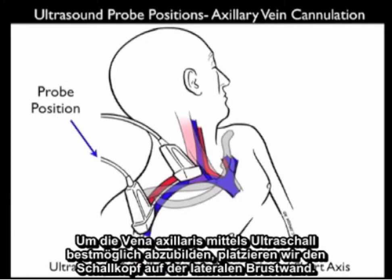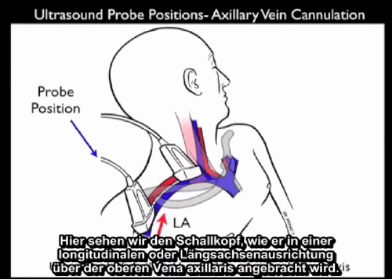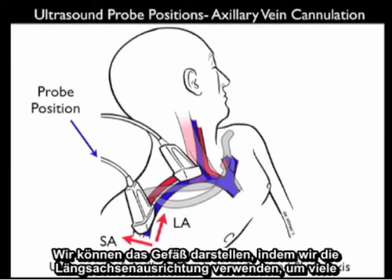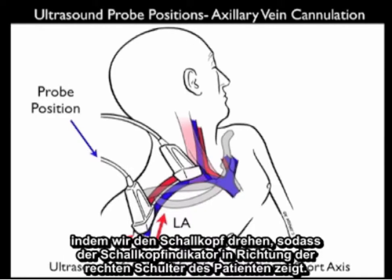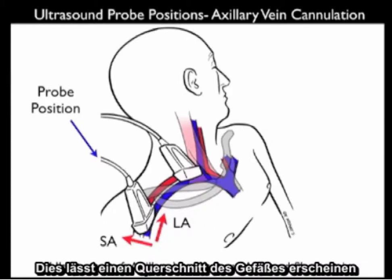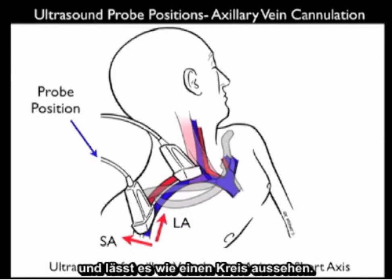To best image the axillary vein using ultrasound, we place the probe on the lateral chest wall. The probe can be applied in a longitudinal or long axis orientation over the top of the axillary vein to get detailed information about the vessel. We can also look in the short axis orientation by turning the probe so the indicator is towards the patient's right shoulder, cutting the vessel in cross-section so it appears as a circle.